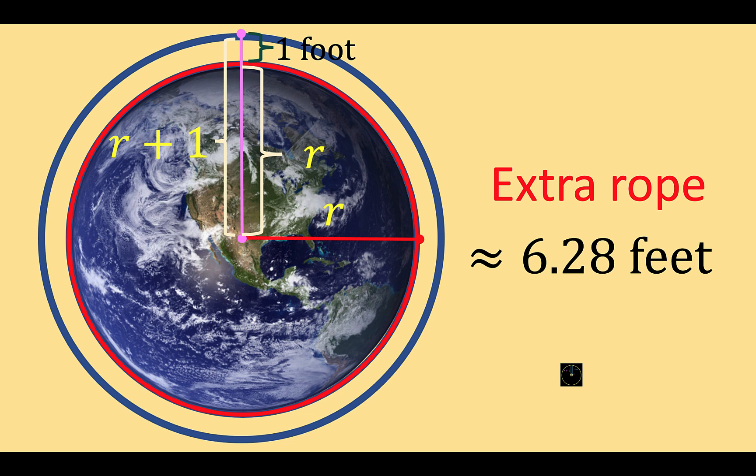And that is contrary to our intuition. Now, the reason why our intuition might mislead us in this situation is because we are thinking of the circumference itself. We are not thinking about that extra rope.